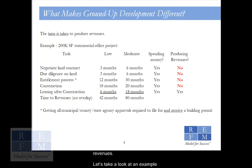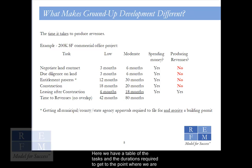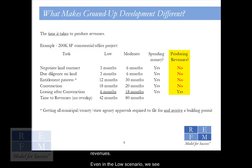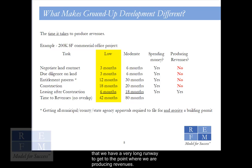Let's take a look at an example of a 200,000-square-foot commercial office tower with underground parking. Here we have a table of the tasks and the durations required to get to the point where we are producing revenues on a development project of this nature. These tasks are listed from top to bottom in their order in the development process, and we ask for each task if we are spending money during that task, and then we ask if we are producing revenues. Even in the low scenario, we see that we have a very long runway to get to the point where we are producing revenues.